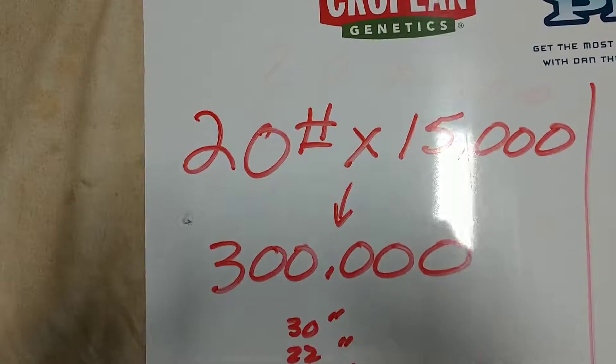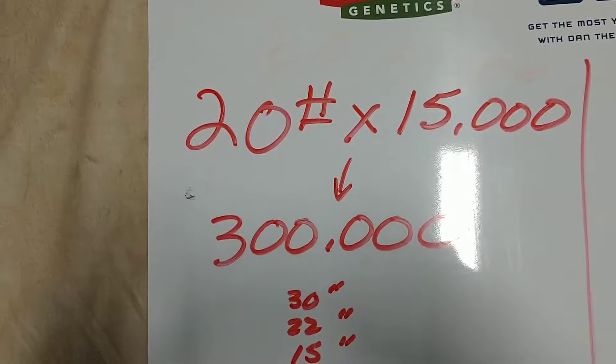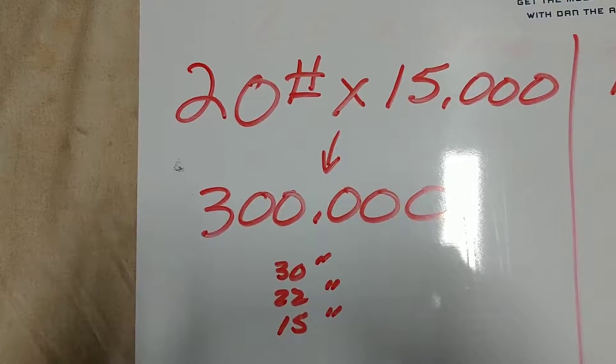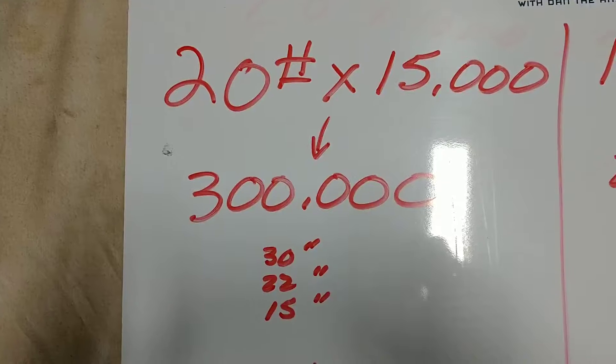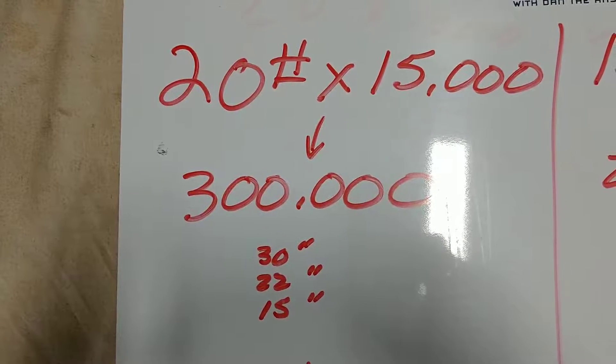Generally it's about 15,000 seeds per pound. 300,000 seeds per acre. Okay guys, imagine that in a 30 inch row, a 22 inch row, or a 15 inch row.